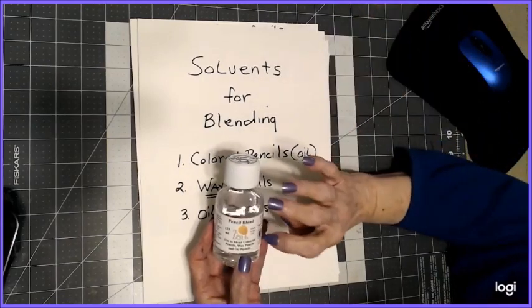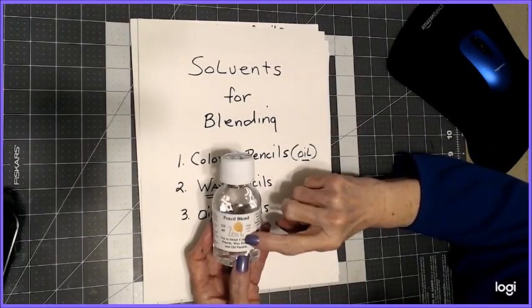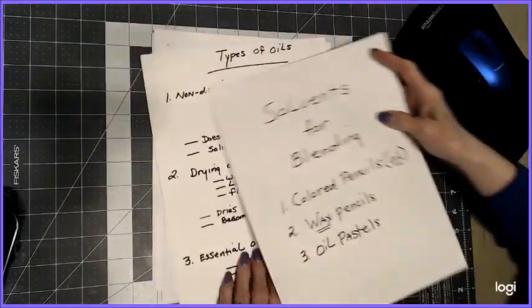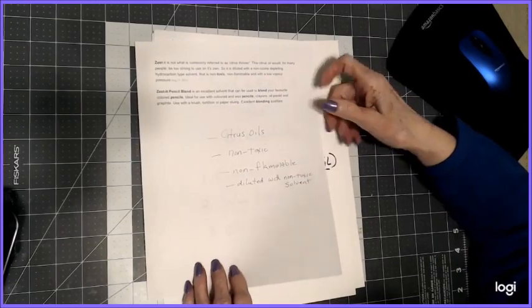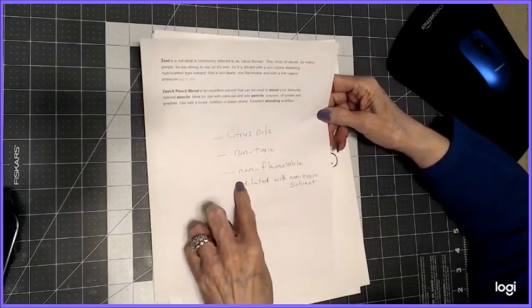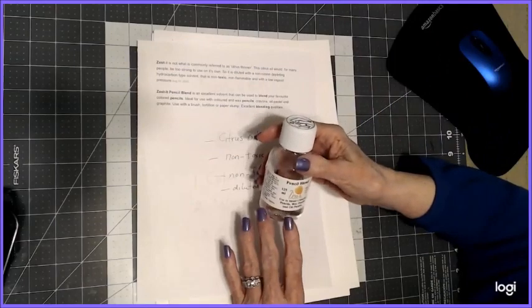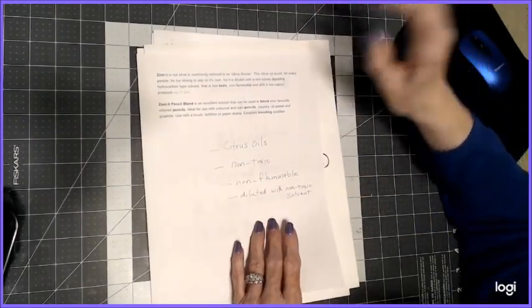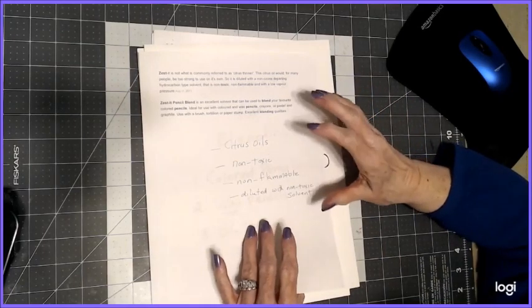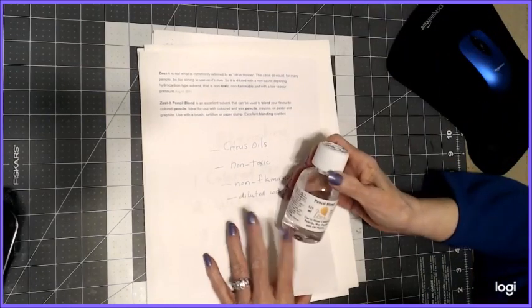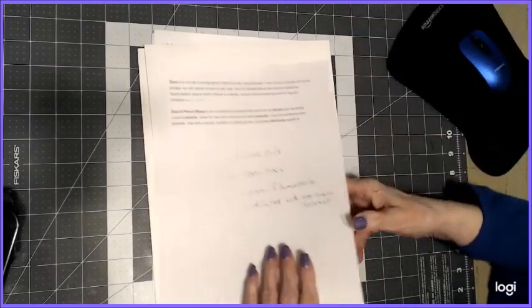Zest-It comes in this sponge container where you can pour your solvent, and it's handy with no spill, no mess. This one happens to be citrus fragrance, and it's lovely. But you can also get this in odorless, which is still a non-toxic product. It's made from citrus oils, it's non-toxic and non-flammable.